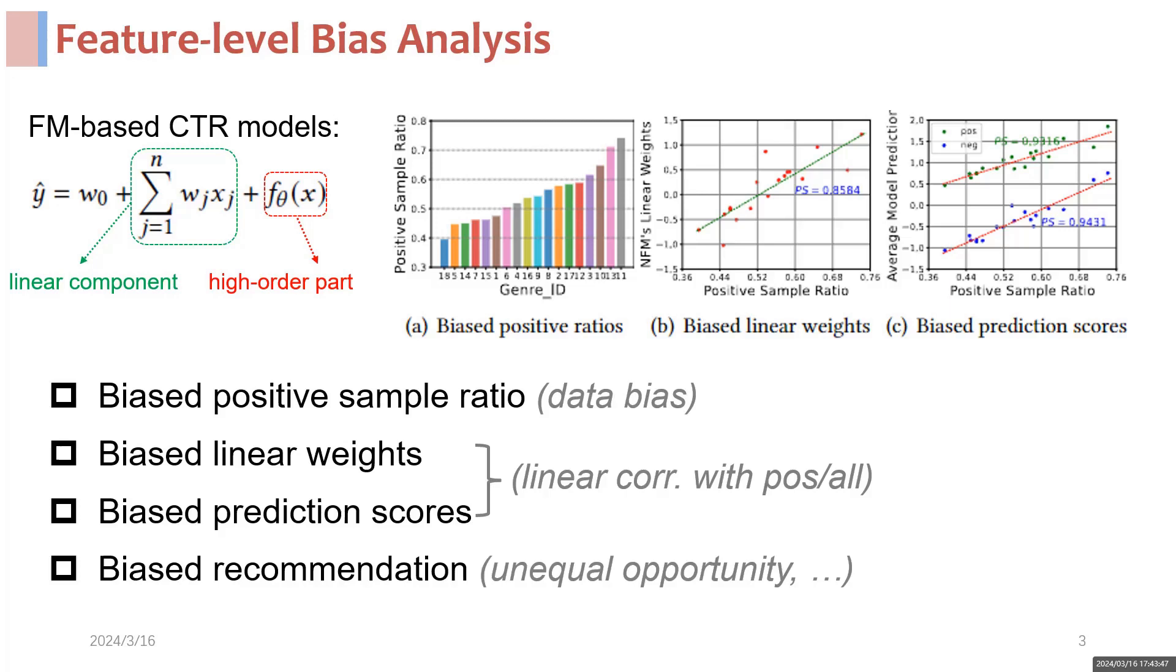Finally, we discover a biased generation path as follows: biased positive sample ratios to biased linear weights in CTR model to biased prediction scores to biased recommendations.